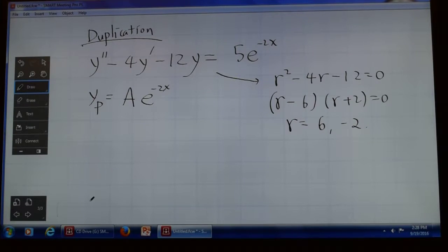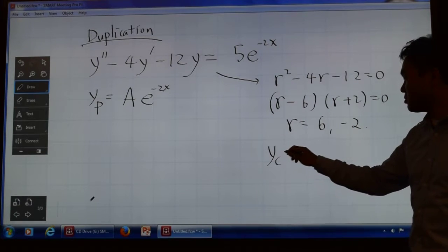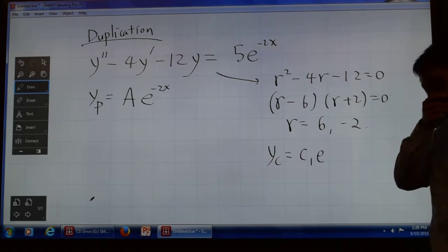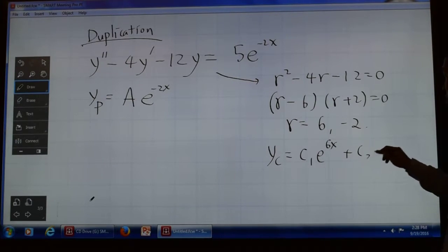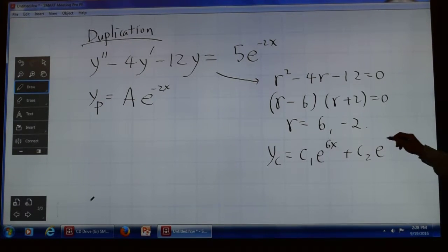Which factors as r minus 6 and r plus 2. So that r is equal to 6 and negative 2. So you have two solutions, 6 and negative 2, and that gives you your complementary solution as c1 times e to 6x, then c2 times e to the negative 2x.